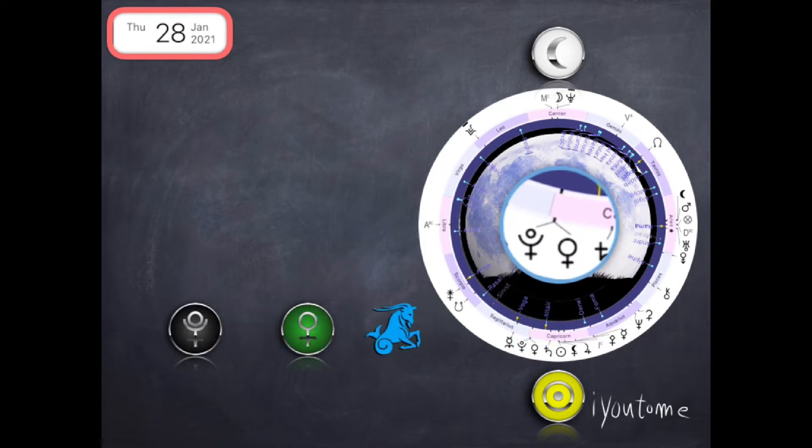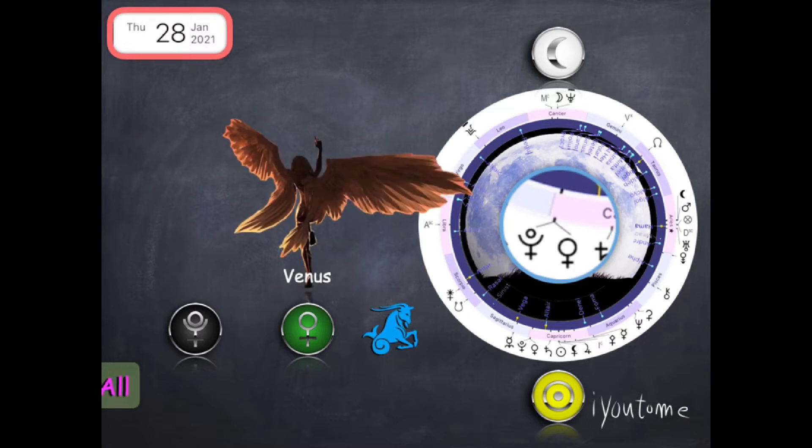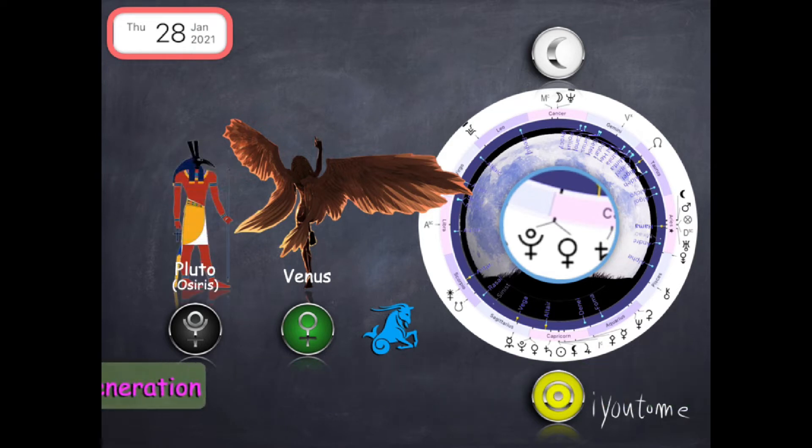Next we have Pluto aligned with Venus in beginnings of Capricorn. Venus, the goddess of love, is ensuring all Mother Nature's beings are loved and safe. Pluto, god of subconscious regeneration, making metaphysical or spiritual changes whether you like it or not.